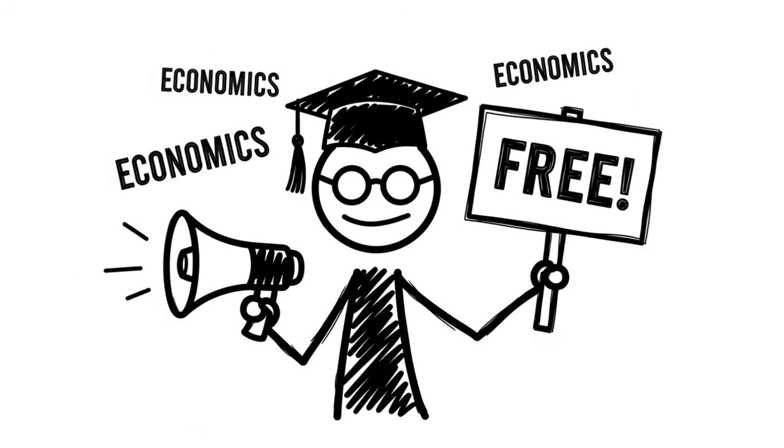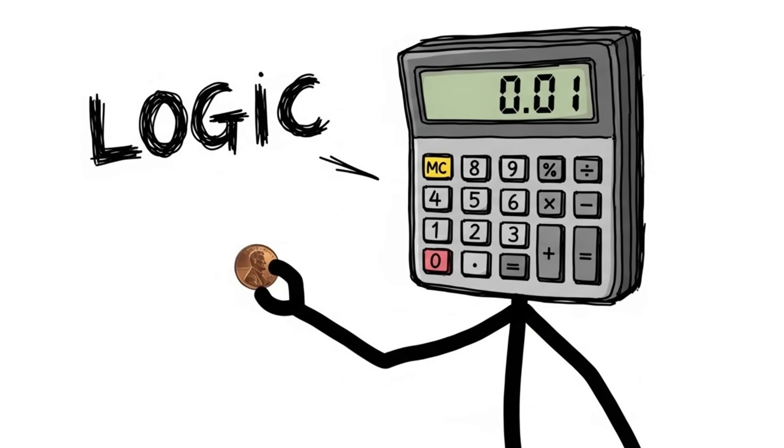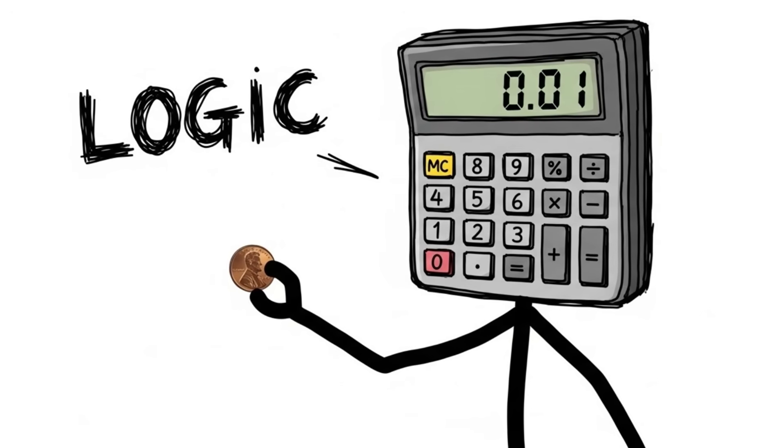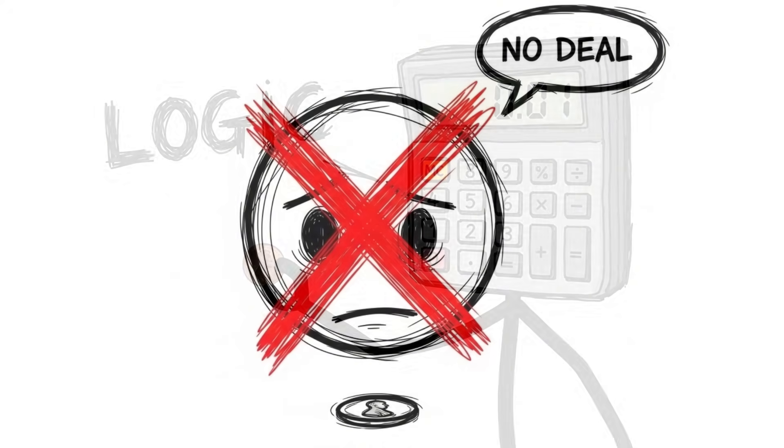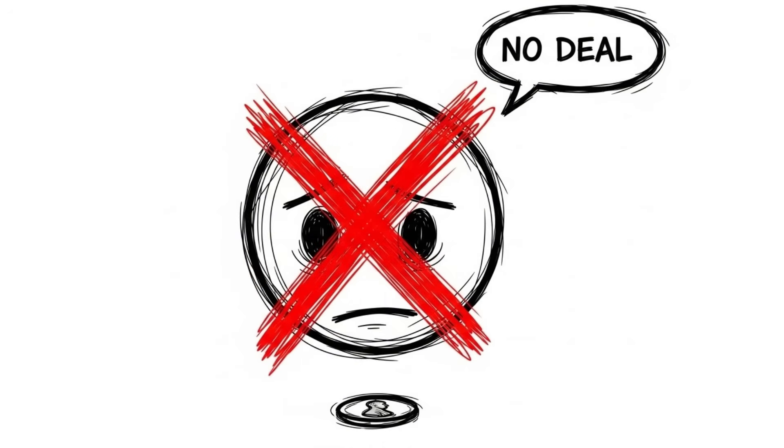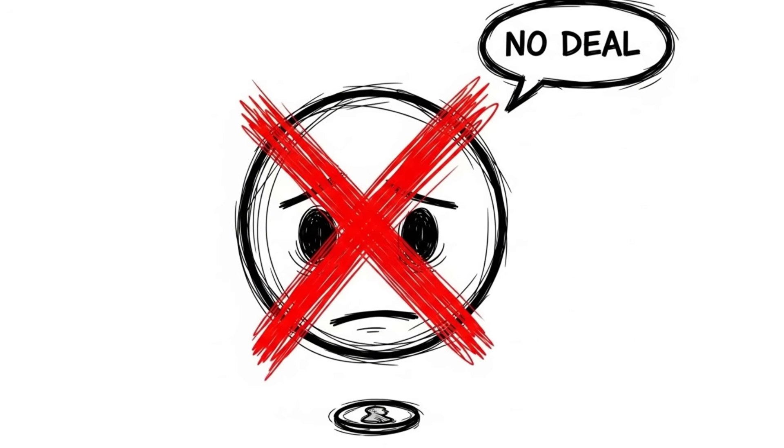Now, pure logic, the kind economists used to believe ruled the world, dictates that the stranger should accept any offer greater than zero. Even one penny is better than nothing, right? A purely rational, profit-maximizing agent would take the penny. But that is not what happens.